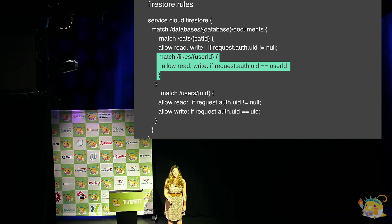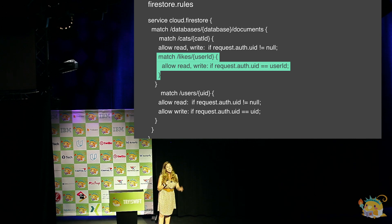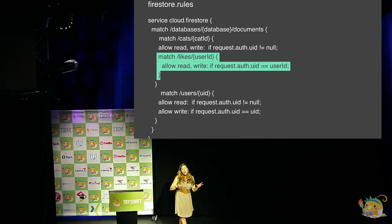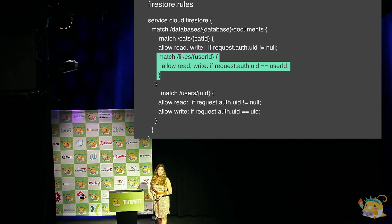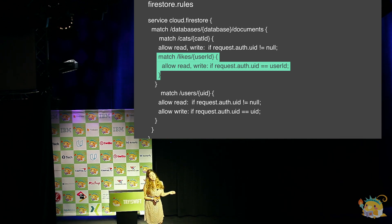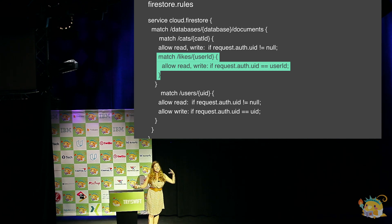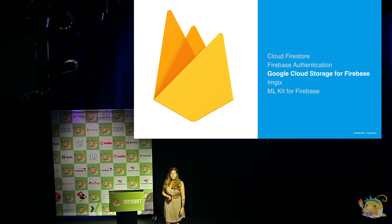Even more importantly, you can have different rules for sub-collections. Remember I had that sub-collection of likes inside of each cat document — so each cat post has its own list of likes. I don't want someone to be able to spam and see how many people liked a post. So you can allow read and write if the 'request.auth.uid' matches the path — they can only write to their own specific document. They can turn it on and off: like it, and then not like it.